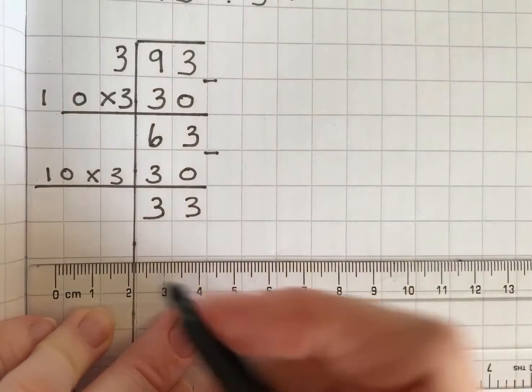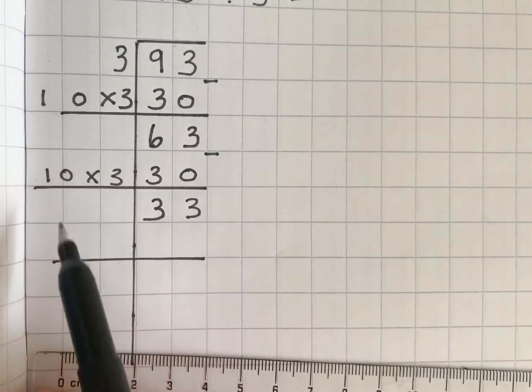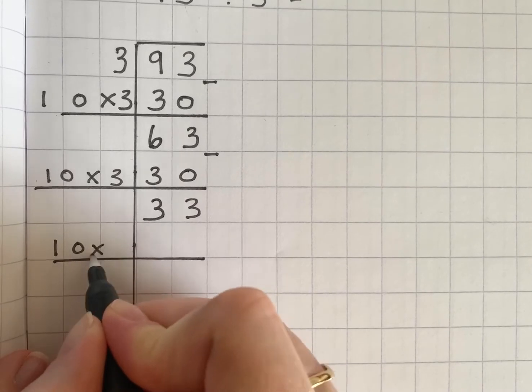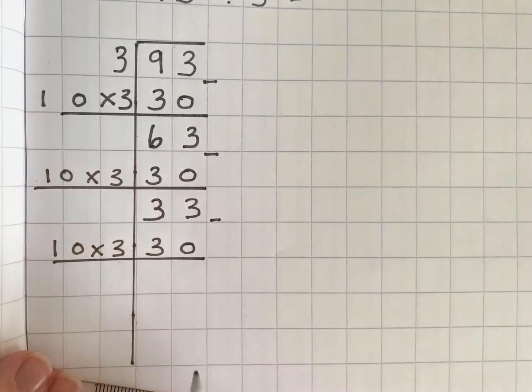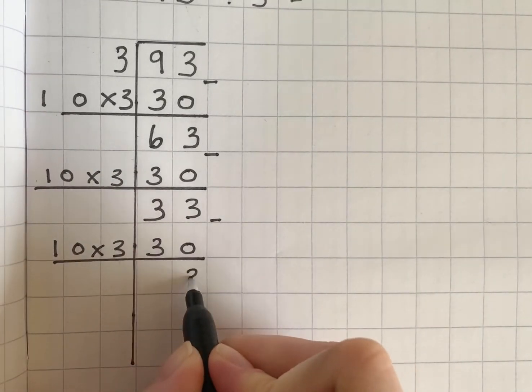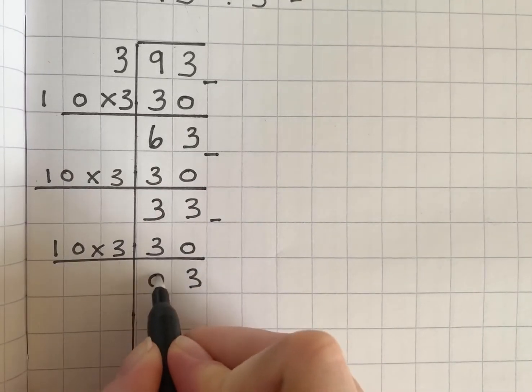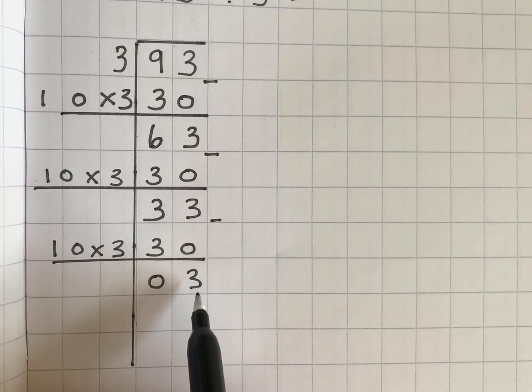And again I can still take away another 10 times 3 which is 30. 3 ones take away 0 is 3 and 3 tens take away 3 tens is 0 and I'm just left with 3 ones.